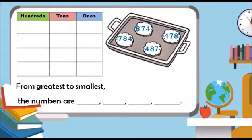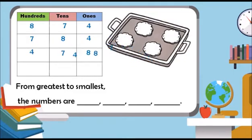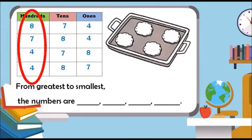Let us take a look at the last example. Let us put the numbers in the place value chart first. Let us compare the hundreds. Eight hundreds is greater than seven hundreds. Seven hundreds is greater than four hundreds. So, eight hundred and seventy-four is the greatest. Seven hundred and eighty-four is the next.